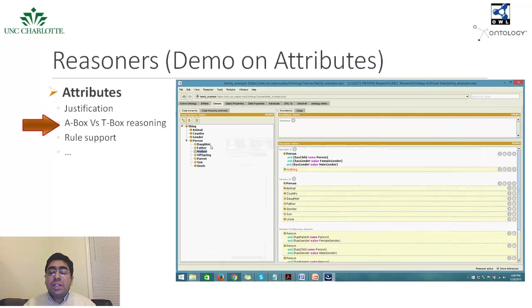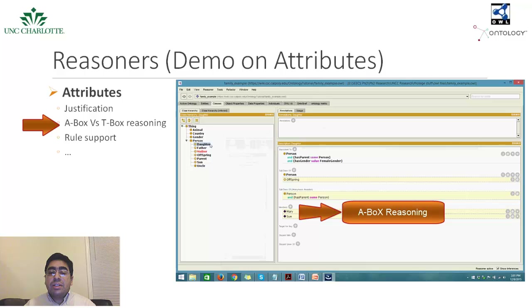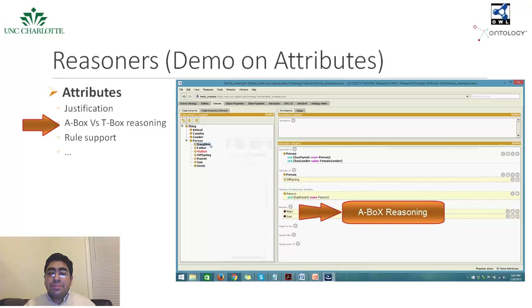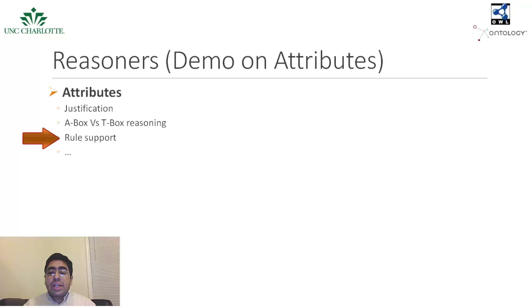A-box reasoning is the reasoning over individuals, such as automatic classification and checking inconsistency of instances. Whereas T-box reasoning is the inference over classes. Not all reasoners support A-box reasoning. As we can see in the figure, the Pellet reasoner supports A-box reasoning as it has automatically classified instances Mary and Sue as members of the class daughter. The rule support attribute empowers the reasoner to combine rule reasoning with ontologies. We will cover this later and look at how rules can supplement the capabilities of OWL-based ontologies.